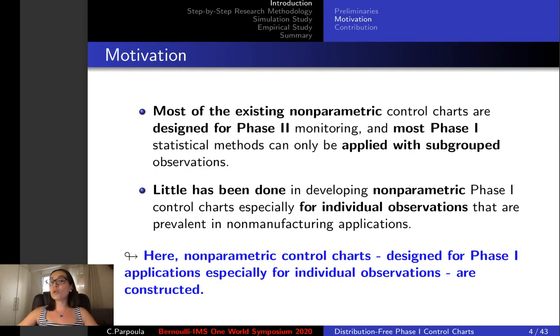However, most of the existing non-parametric control charts are designed for phase two monitoring and those for phase one analysis could only be applied with subgrouped observations. Little has been done in developing non-parametric phase one control charts especially for individual observations that are prevalent in non-manufacturing applications.